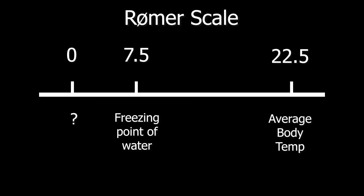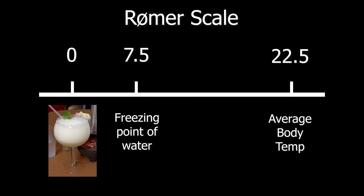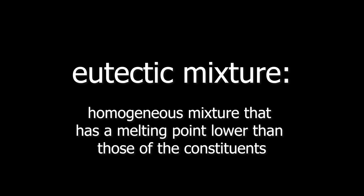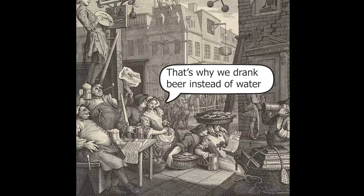The Rømer scale pegged zero to the freezing point of a brine mixture consisting of water, ice, and ammonium chloride, which is a type of salt. This was done for a practical reason: in the early 1700s, this eutectic mixture freezes at a stable, consistent temperature and was easily reproducible. The pure water needed to calibrate a consistent freezing point was actually more difficult to produce.